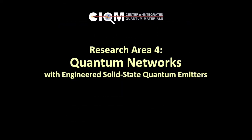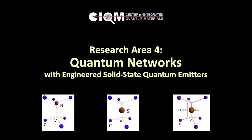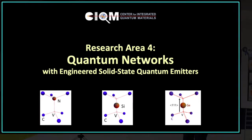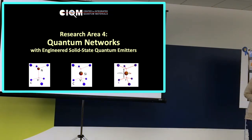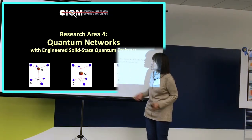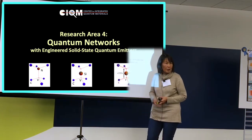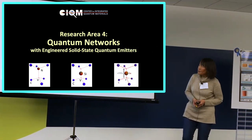Research Area 4 is named Quantum Networks with Engineered Solid-State Quantum Emitters. Research Area 4 began as an area that focused on color centers, novel kinds of emitters in the solid-state and wide bandgap materials, such as color centers in diamond, silicon carbide, and other wide bandgap materials.